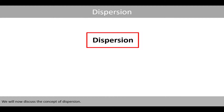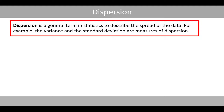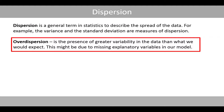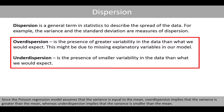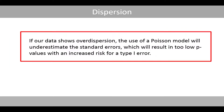We'll now discuss the concept of dispersion. Dispersion is a general term in statistics to describe the spread of the data; for example, the variance and the standard deviation are measures of dispersion. Overdispersion is the presence of greater variability in the data than what we would expect. Since the Poisson regression model assumes that the variance is equal to the mean, overdispersion implies that the variance is greater than the mean, whereas underdispersion implies that the variance is smaller than the mean. If our data shows overdispersion, the use of a Poisson model will underestimate the standard errors, which will result in too-low p-values with an increased risk for a type 1 error.